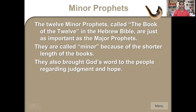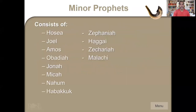All the prophets of God are major. The prophets were like the preachers in the Old Testament, warning God's people. The Minor Prophets consist of Hosea, Joel, Amos, Obadiah, Jonah, and Micah — we're going to cover those six.